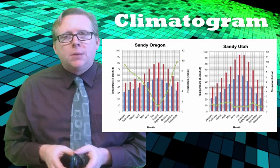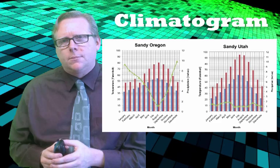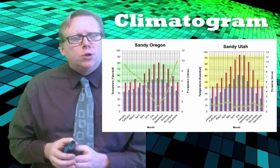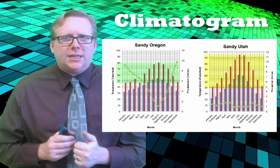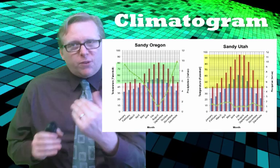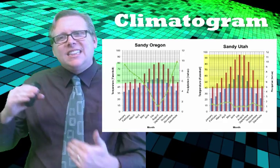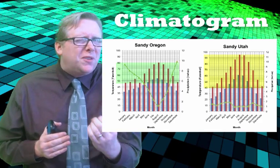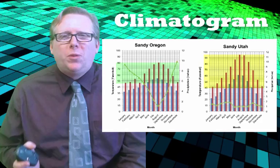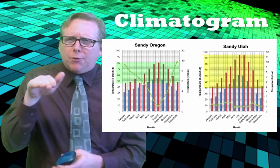Looking at these two climatograms, one of the things that stands out right away is the changes in temperature. In Sandy, Utah, January high temperatures barely reach the 40s, but in July the temperature hits the mid-90s — that's a swing of over 50 degrees. Here in Sandy, Oregon, our swing isn't that big: January highs are in the upper 40s and August — our hottest month — reaches maybe 90°F, so only about 30 to 40 degrees difference. Our climate here in Sandy, Oregon is a lot more level than in Sandy, Utah.